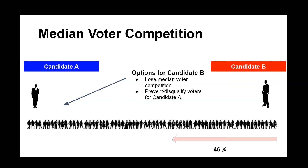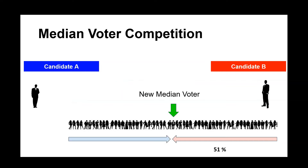Or you could prevent, disqualify, or discourage voters for candidate A. By removing voters from the voting population by lawsuit or by voting restrictions, that has the effect of moving the median.